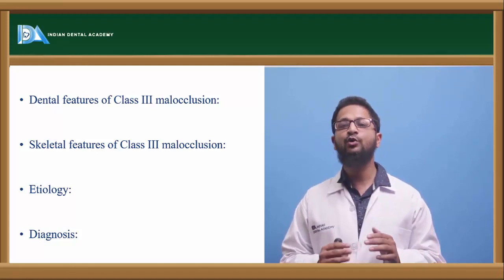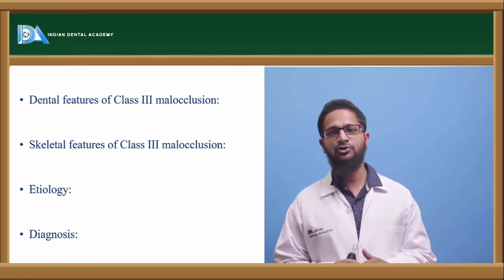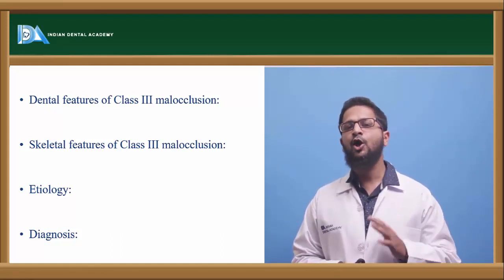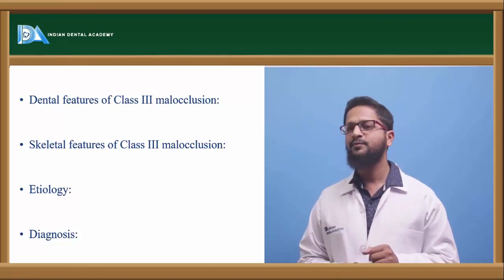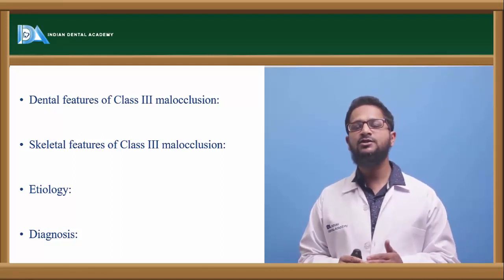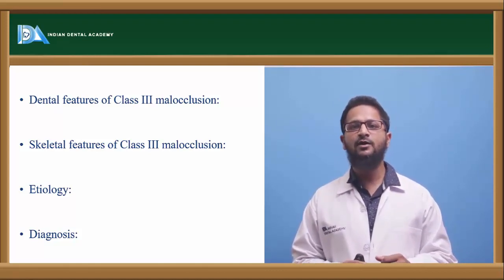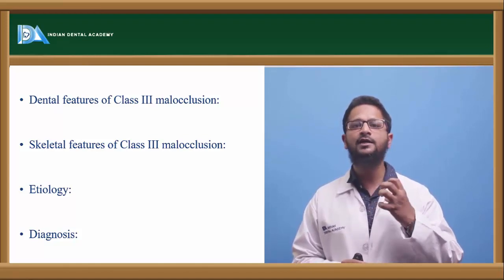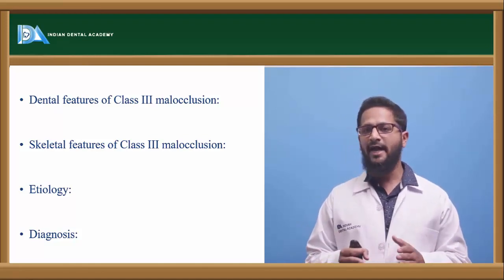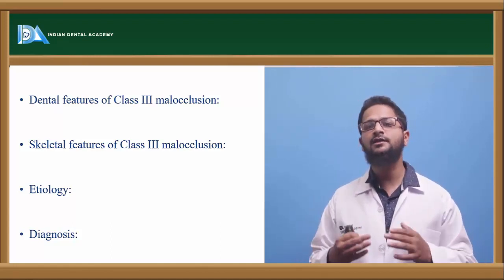Apart from this, these patients usually have a wider mandible and narrower maxilla. The skeletal features of Class III malocclusion include prognathic mandible, retrognathic maxilla, or a combination of both. Another commonly seen feature is pseudo-Class III. Pseudo-Class III malocclusion is a condition wherein because of certain occlusal deformities, the patient closes the mouth in an altered fashion, developing Class III malocclusion. The skeletal deformity is not actually present but because of these occlusal deformities, there is alteration in jaw growth.